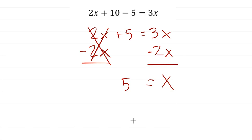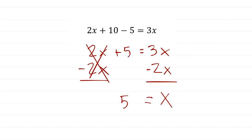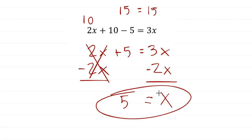I brought the 2x from the left to the right. I could have brought the 3x to the left side, but I don't want to put the variable on the same side as the constant. The main purpose is to isolate the variable — all variables on one side, everything else on the other. Let's double-check: x equals 5, so 2 times 5 is 10, 10 plus 10 is 20, 20 minus 5 is 15. On the right side, 3 times 5 is definitely 15. Correct answer.